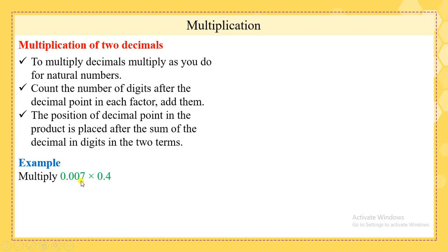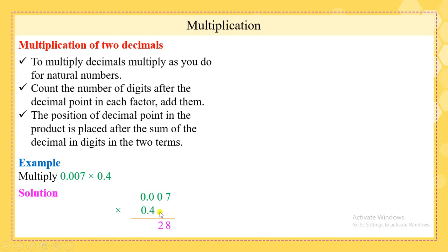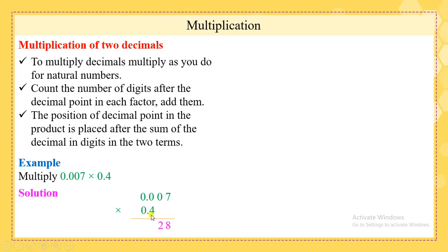Multiply 0.007 times 0.4. We will arrange these two numbers above each other. Now we will multiply them as if they are natural numbers, ignoring the zeros and the decimal points. Begin by multiplying 4 by 7 — 4 times 7 is 28. Now count the digits after the decimal point: the first number has 3 digits and the second has 1 digit in the decimal part. 3 plus 1 equals 4, so we will leave 4 digits after the decimal point in our product.